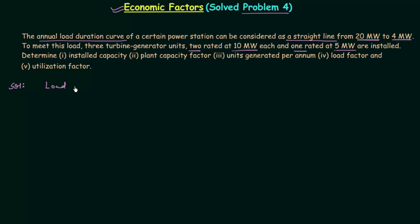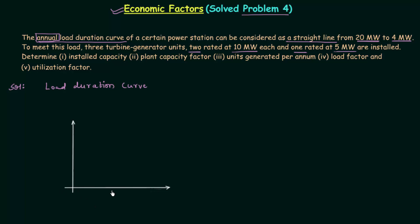Let's start the solution by plotting the load duration curve. We already know the difference between a load curve and a load duration curve. The x-axis represents time in hours and the y-axis represents power demand in megawatt. In this problem we are using megawatt as the unit, though you can also convert to kilowatt (20MW = 20,000 kW). At t = 0 hours, the power demand is maximum at 20MW.